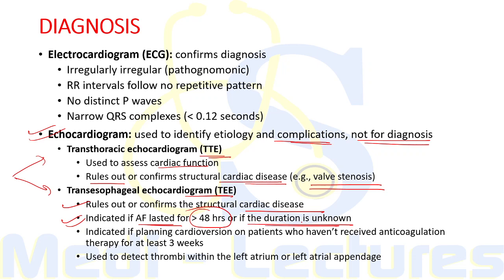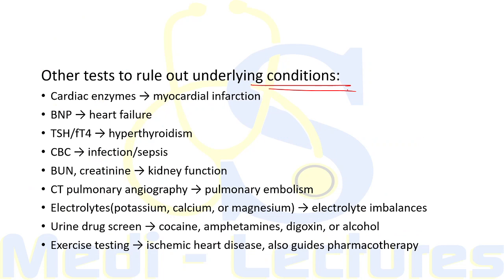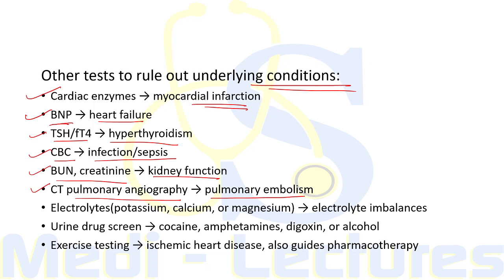Trans-esophageal echocardiogram is indicated if we are planning cardioversion in patients who haven't received anticoagulation therapy for at least three weeks before cardioversion, and it helps detect thrombi within the left atrium or left atrial appendage. Other tests to rule out underlying conditions include cardiac enzymes for myocardial infarction diagnosis, brain natriuretic peptide for heart failure, TSH and free T4 for hyperthyroidism, CBC for infection or sepsis, blood urea nitrogen and creatinine for kidney function, CT pulmonary angiography for pulmonary embolism, electrolytes including potassium, calcium, and magnesium, urine drug screen for cocaine, amphetamines, digoxin, or alcohol, and exercise testing to diagnose ischemic heart disease and guide pharmacotherapy.